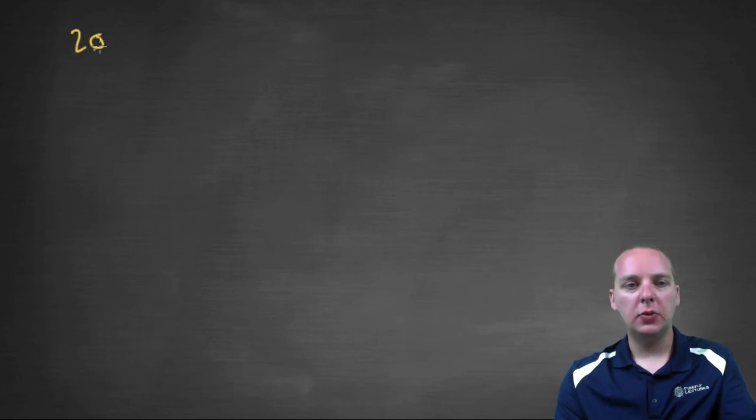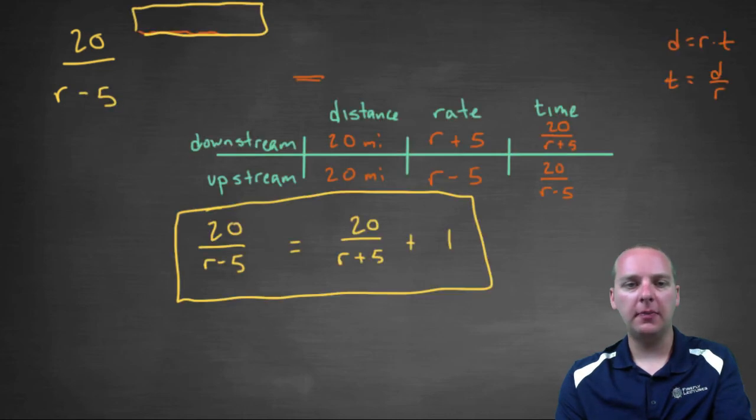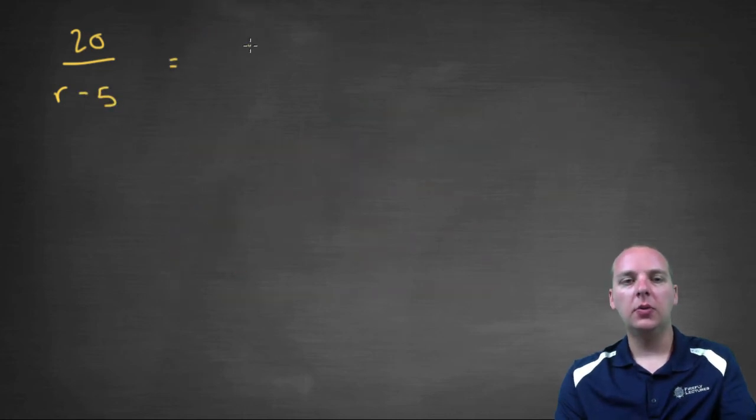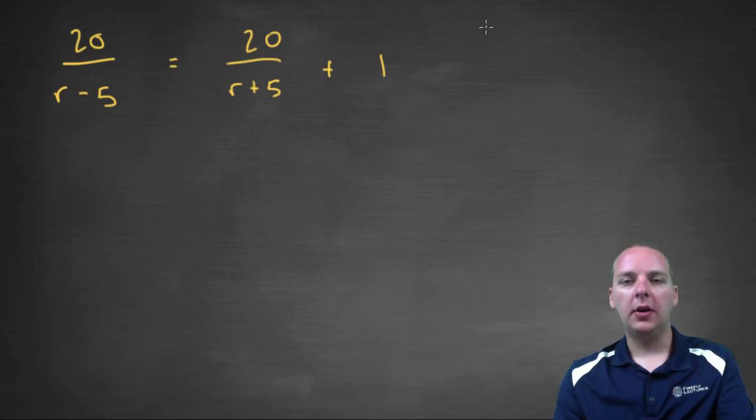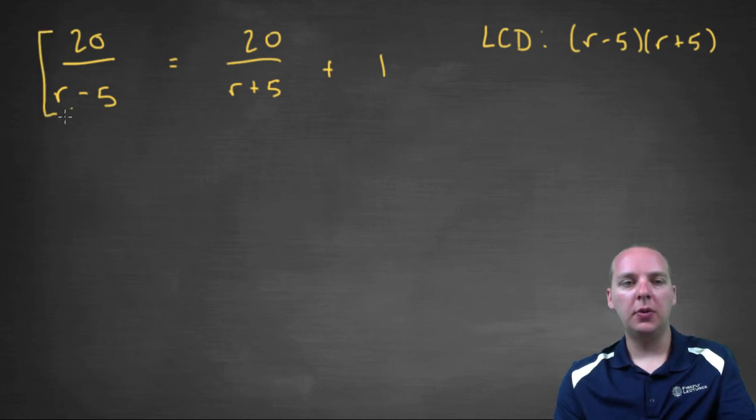Alright, so let's see, 20 over r minus 5, that was minus 5, right? Yep. Equals 20 over r plus 5, plus 1. Okay, we need our LCD. The least common denominator here would be, r minus 5, times r plus 5. Multiply that to both sides, left side and the right side.